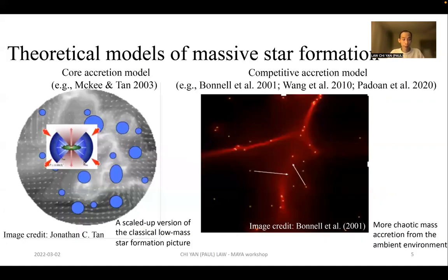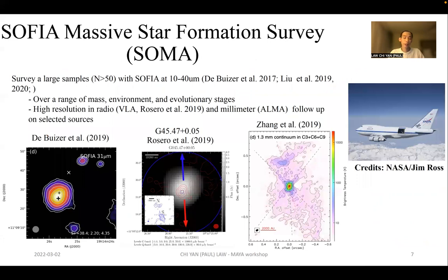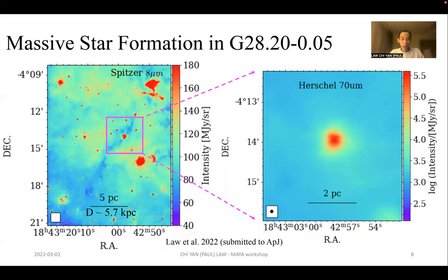Two main theories have been proposed for massive star formation, which is much more complicated. On the left is the core accretion model, which is essentially a scaled-up version of the classical low-mass star formation picture, while on the right is the competitive accretion model involving a larger scale ambient environment and more chaotic mass accretions. To do this, we need observations, and one of them is the SOFIA massive star formation survey or dubbed as the SOMA survey. It surveys a large sample of massive protostars with SOFIA 10 to 40 microns across a large range of mass, environment, and evolutionary stages. A subset of these sources has been followed up with high resolution VLA and ALMA observations. The source G28 is also a source within the SOMA survey.